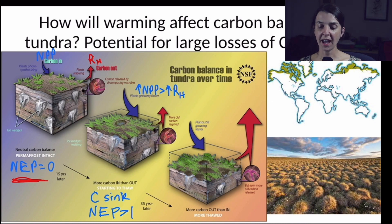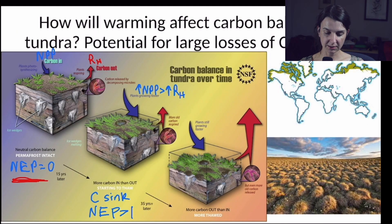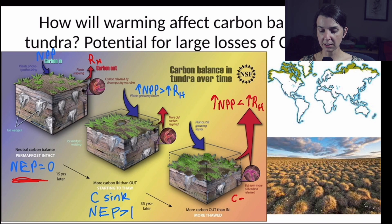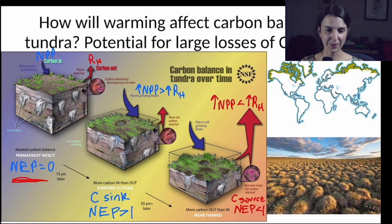However, over time the plants still grow faster and photosynthesize more, but as temperature increases even more, we expect that the increase in NPP would no longer be larger than the increase in decomposition. Decomposition would now be greater, and this would change the tundra from a carbon sink to a carbon source — a source of carbon to the atmosphere — meaning it has an NEP of less than zero. So this is what was predicted to happen maybe 35 years from about 10 years ago.